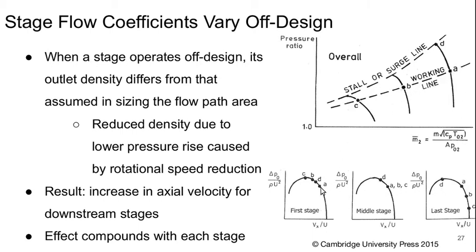If we move down the working line to point B, the first stage is operating higher on its local characteristic—more pressure rise and less mass flow. But now we get the issue of a speed-up in axial velocity due to the less-than-expected density rise. The middle stage may still be roughly at the design point, but the last stage is now operating past design in terms of flow and getting closer to choke. Moving further down to C, the same thing happens but gets worse: C is now at the stability limit of the first stage, approaching positive slope where it becomes unstable—so we're likely going into stall on the first stage—while the last stage is now at choke.